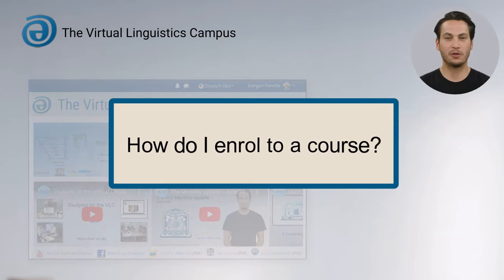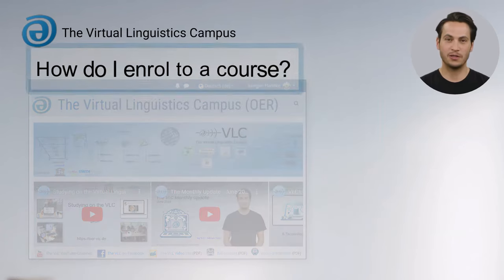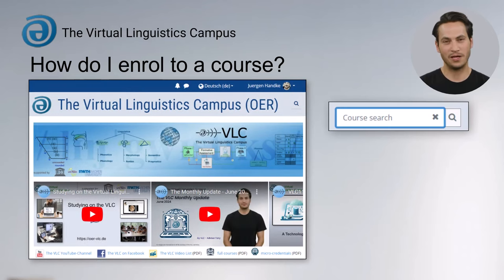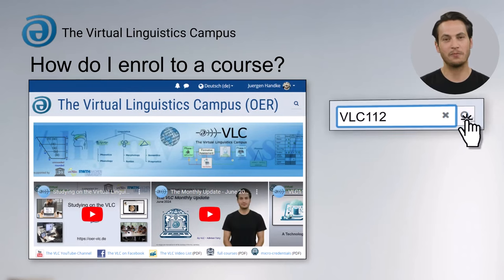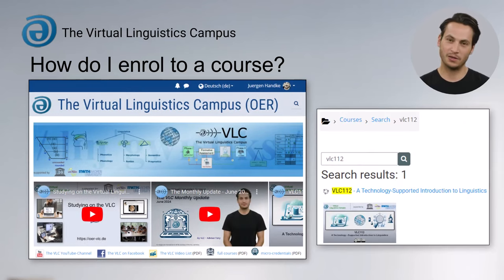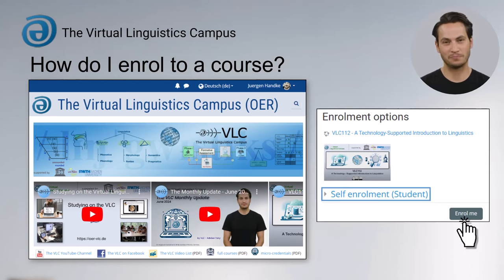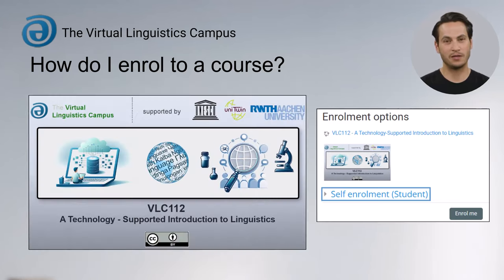To enroll in a course, open the search window at the top right and find your course. Once you have found it, click on the course title and then on 'Enroll Me'. The course is now ready for use.